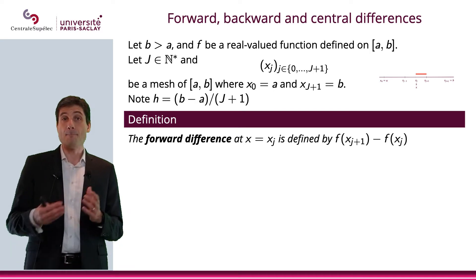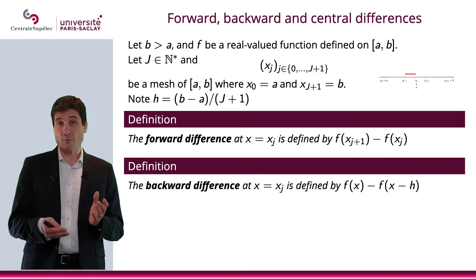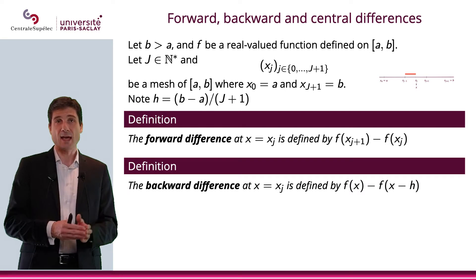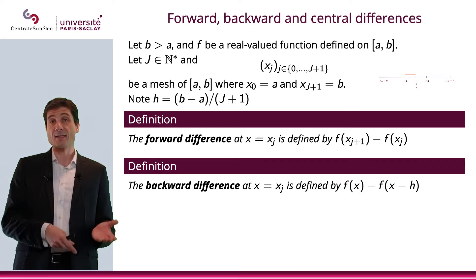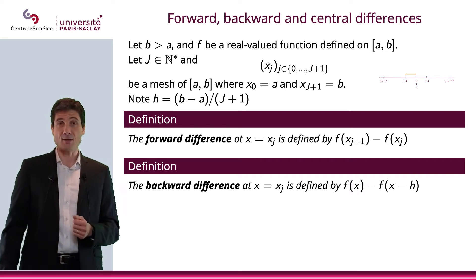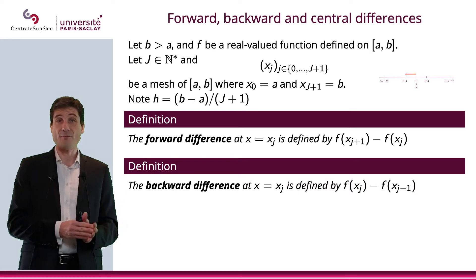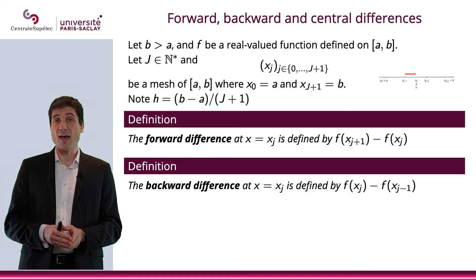I can define the backward difference at x — and of course then I need not to choose x0 — and that will be defined as f(x) − f(x−h), in other words f(x_j) − f(x_{j-1}).